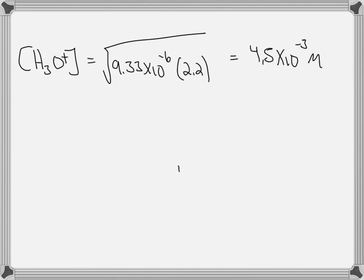The only time this equation doesn't work is when the value we calculate is greater than 5% of the original concentration, which it's not. 4.5 times 10 to the negative 3 is much less than 5% of 2.2.